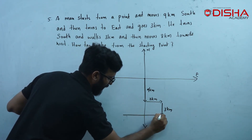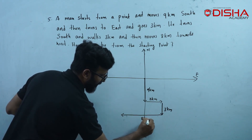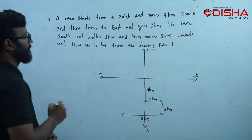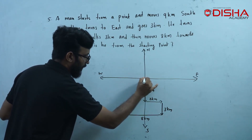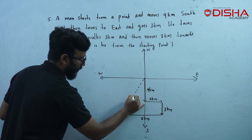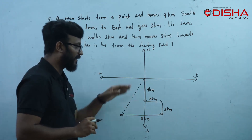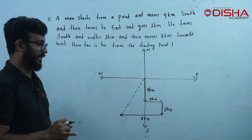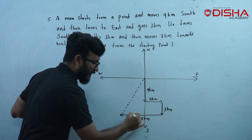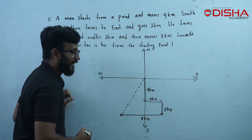Kishore moves 8 km towards west. How is the triangle formed? This triangle is formed. What has he formed with this triangle?